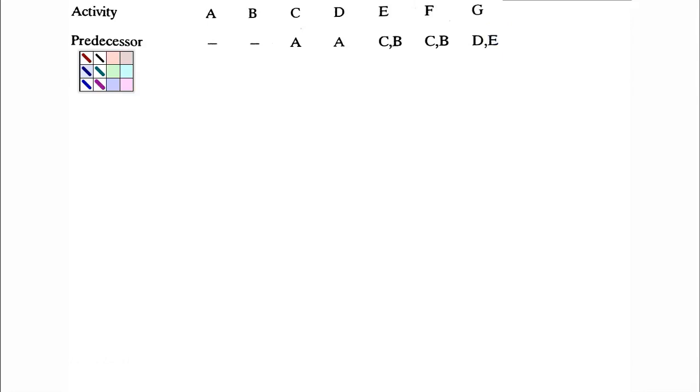So what is our initial analysis about this? Who will start it? Who will end it? And if at all there are any dummies. Now we should be knowing by now all activities who do not have a predecessor. Who are those? A and B. A and B will be starting my network.